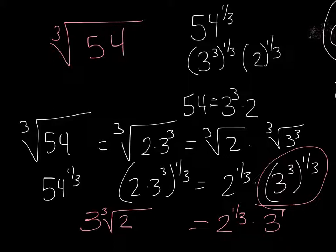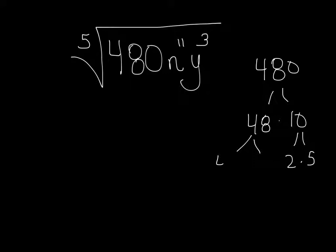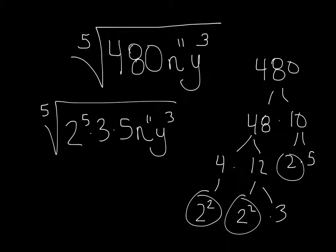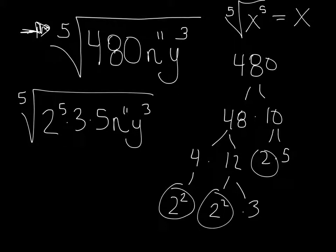Let's do another problem. We want to simplify the fifth root of 480 times n to the eleventh times y to the third. Finding the prime factorization: 480 is 48 times 10; 10 is 2 times 5; 48 is 4 times 12, which is 2 squared times 2 squared times 3, giving us 2 to the fifth. So this equals the fifth root of 2 to the fifth times 3 times 5 times n to the eleventh times y to the third. The fifth root of anything to the fifth power is just that thing — that principle is key.